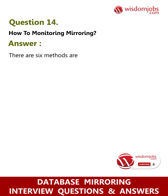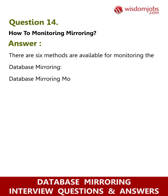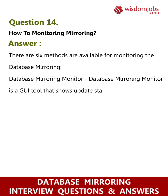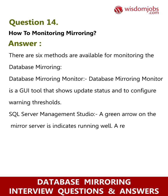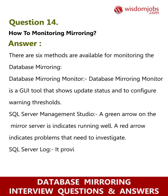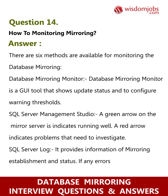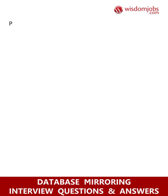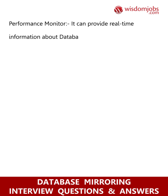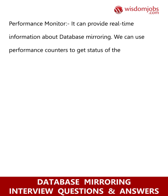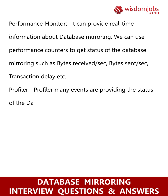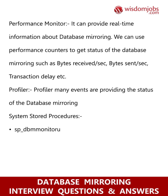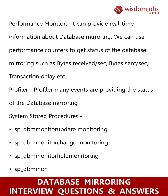Question 14: How do you monitor database mirroring? Answer: Six methods are available. Database Mirroring Monitor shows update status and configures warning thresholds. SQL Server Management Studio uses green or red arrows on the mirror server to indicate status. SQL Server Log provides information on mirroring establishment, status, and errors, which are also logged to the Windows Event Log. Performance Monitor provides real-time information using counters such as bytes received/sec, bytes sent/sec, and transaction delay. Profiler provides many mirroring status events. System stored procedures include sp_dbmmonitor_update, sp_dbmmonitor_change, sp_dbmmonitor_help, and sp_dbmmonitor_drop.